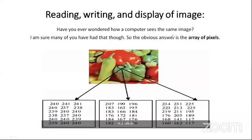Reading, writing, and displaying of the image. A human being has the capability to see an image — you see this image and neurons fire in your brain, telling you it's a green capsicum. But how can a computer see an image? The answer is: an array of pixels. The computer can see this picture as an array of pixels corresponding to it. The computer doesn't know whether it's a capsicum or a banana, but it knows this is the image and there is an array of pixels corresponding to that.